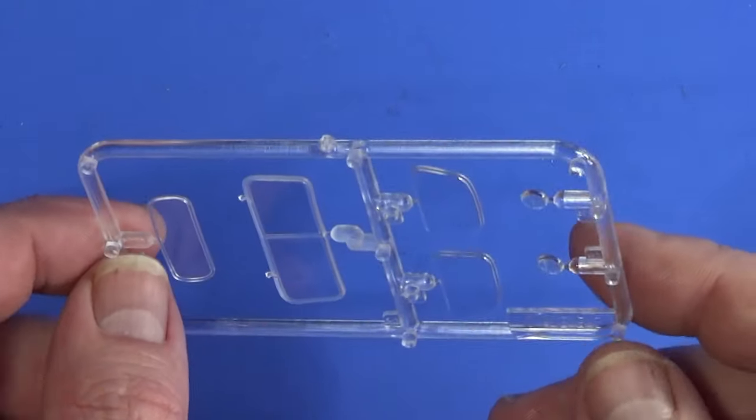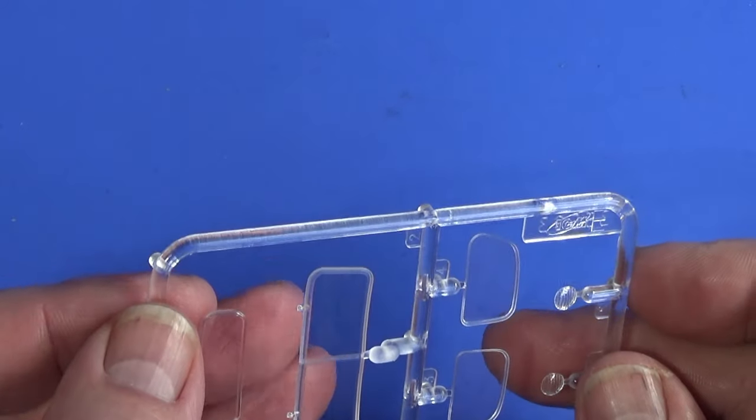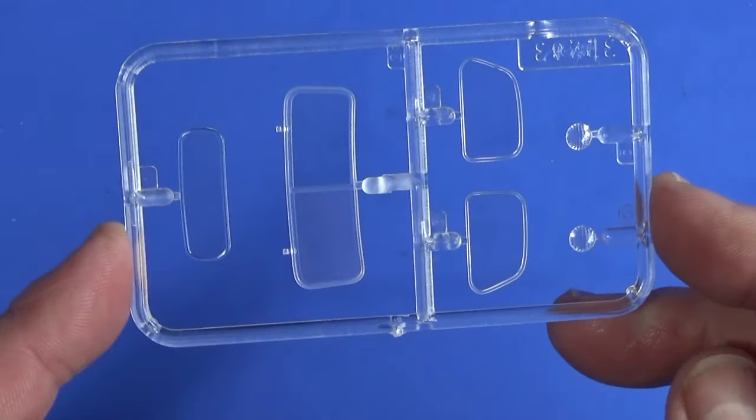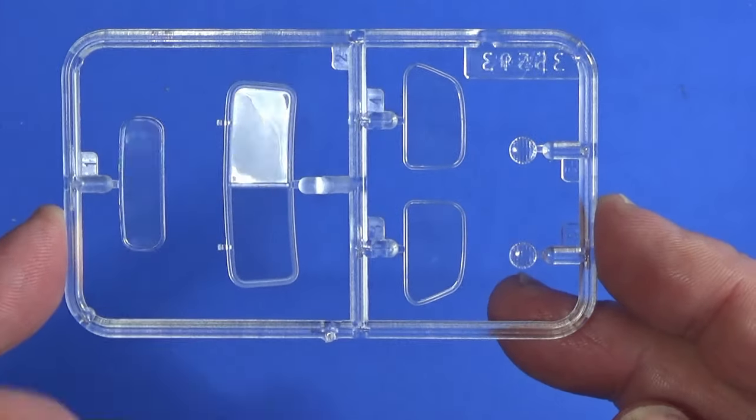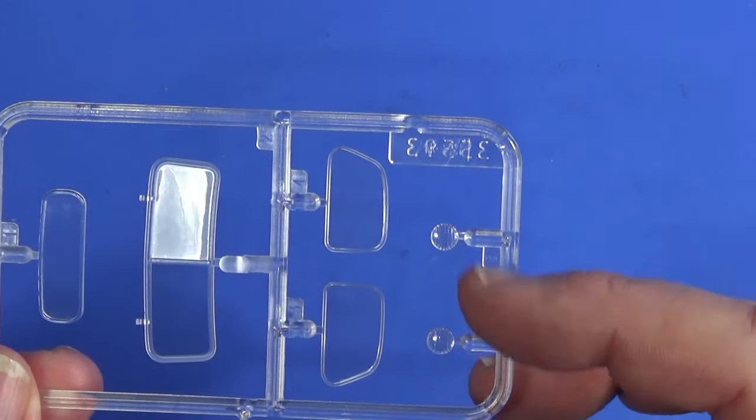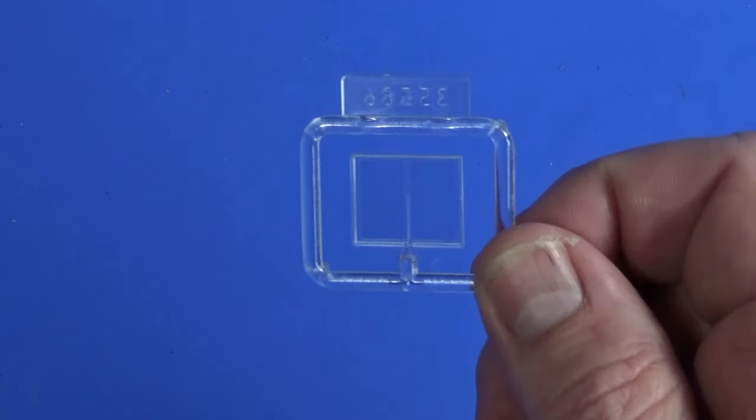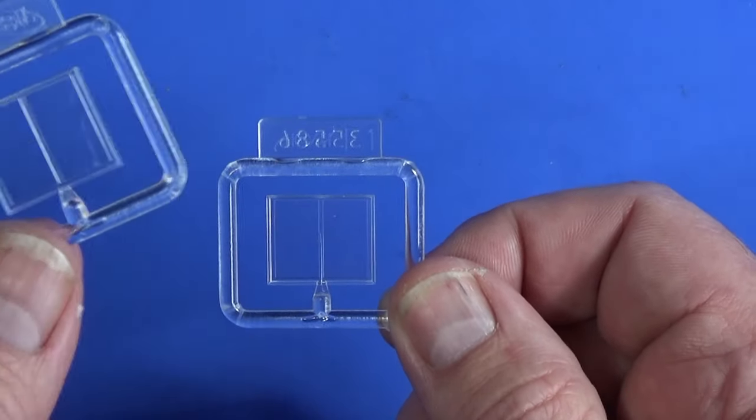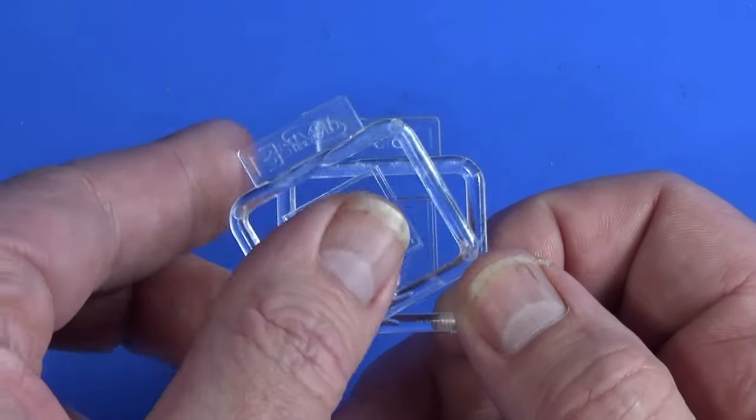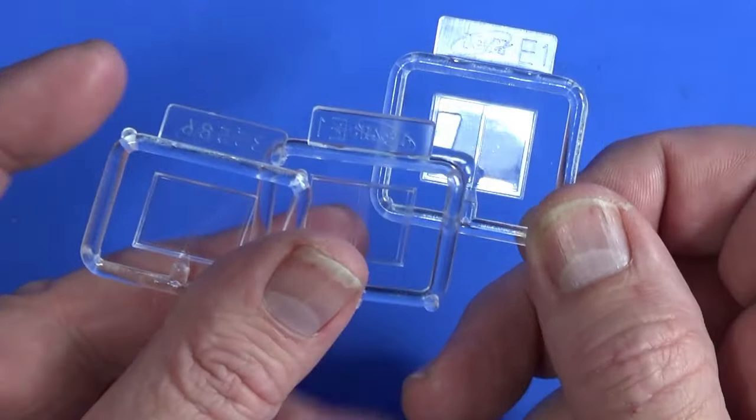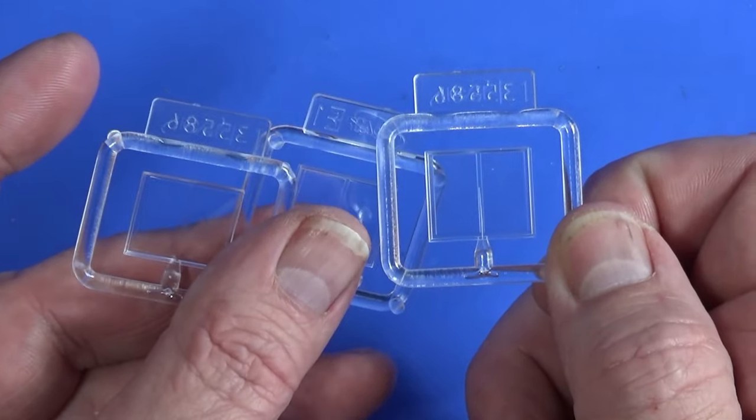Then we have a couple of frames of transparent parts. This is Frame E, the transparent parts for the cab and headlamps. But then we also have parts labeled E1, which are the windows for the chapel cab. There are three sets of windows for the chapel cab itself, all the same, labeled E1.